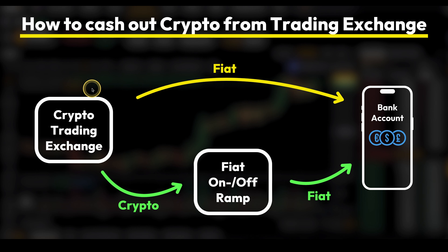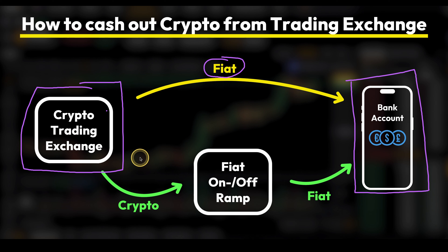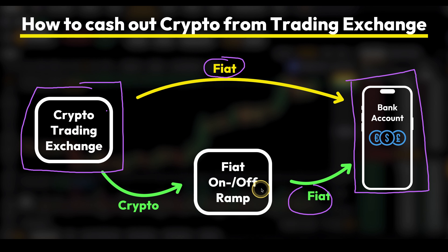When withdrawing money from a crypto trading exchange back to our bank account, we basically have two different options. Either we withdraw the fiat money — so euro or US dollar — directly from the exchange to our bank account. But unfortunately, that is not always possible. So the other way would be to first send crypto from that exchange to a so-called fiat on and off ramp, which is basically an exchange optimized for interacting with fiat money and your own bank account. So we first send crypto there, convert it to fiat, and then send fiat from there back to our bank account.